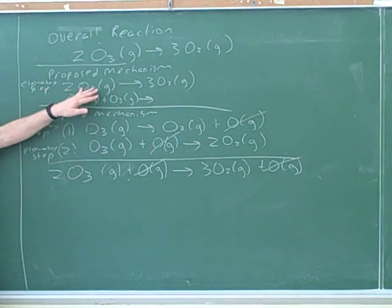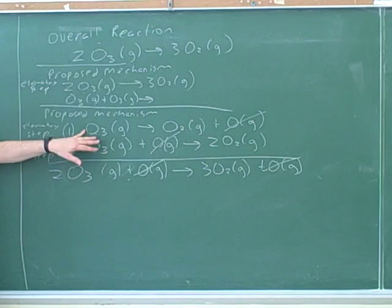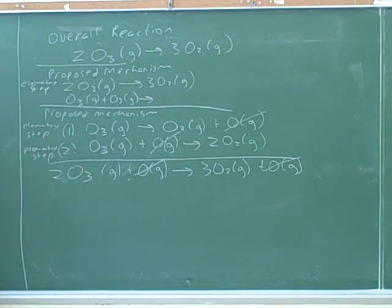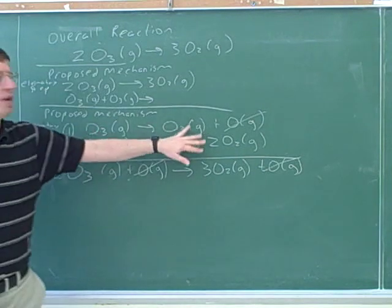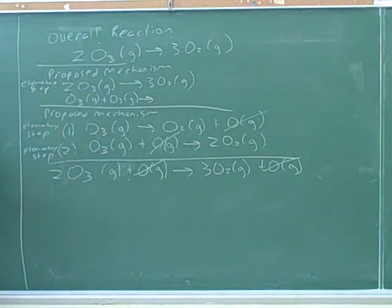So the molecularity of that step would be bimolecular — two separate molecules bumped into each other. For a step with only one atom by itself, the molecularity is unimolecular. How can you have a reaction with one atom by itself? It's actually not that hard — a single atom that just kicks out one of its pieces can react just by itself.